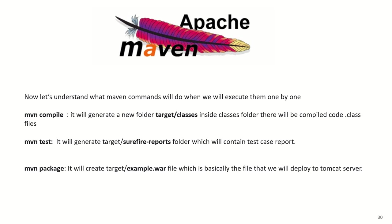The Maven commands we'll execute are: first, mvn compile — generates a target folder with compiled .class files; second, mvn test — generates a target/surefire-reports folder with test case reports; third, mvn package — creates an example.war file which is our artifact that gets stored to the Nexus repository and then deployed to the Tomcat server. These are the main Maven commands for this example.